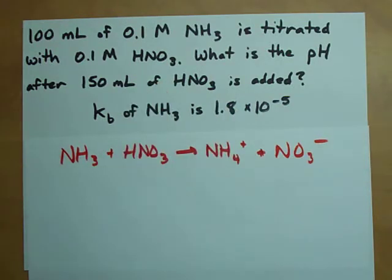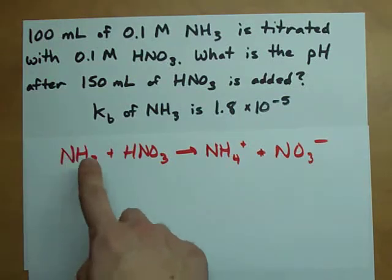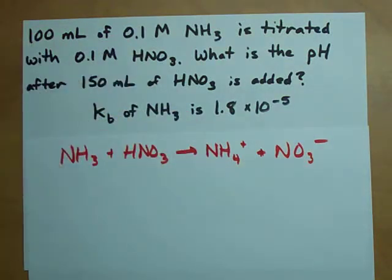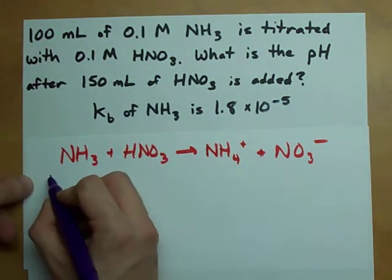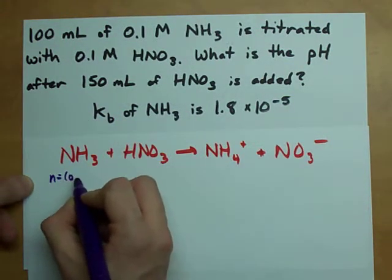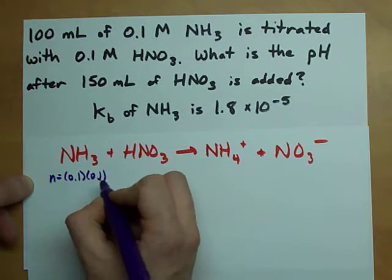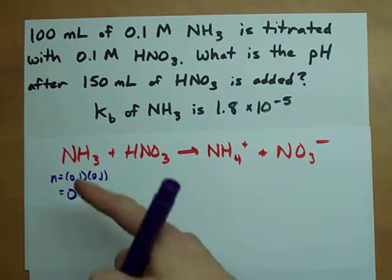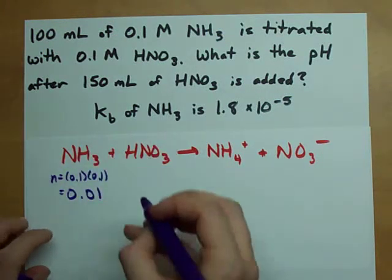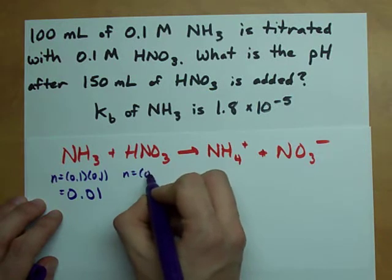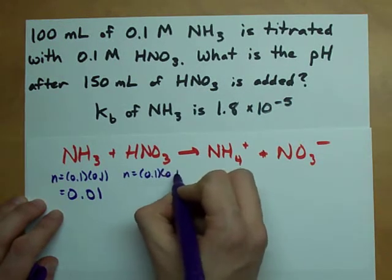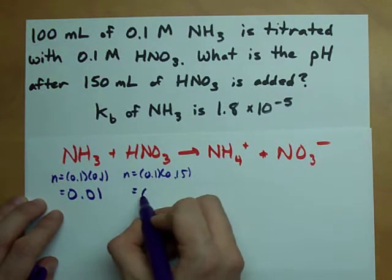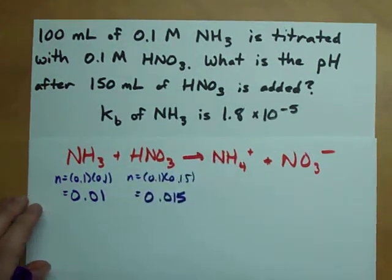Now, step two. I like to figure out how many moles of each reactant I have. That's easy in this case because I'm given concentration and volume. The number of moles of NH3 is the concentration, 0.1 times the volume, 0.1 liters. It turns out I have 0.01 moles of ammonia. In this case, for nitric acid, 0.1 moles per liter, 0.15 liters. So it turns out I have 0.015 moles of nitric acid.